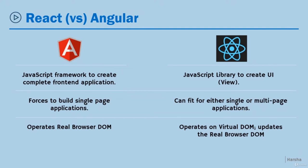Another difference between Angular and React is that Angular by default supports two-way binding — it can read inputs from the user and also provide state data to the user. But React by default supports only one-way binding; it officially doesn't support two-way binding. It can render state to the user but cannot read inputs from the user. However, a developer can manually read text box values and update the state, effectively achieving two-way binding.